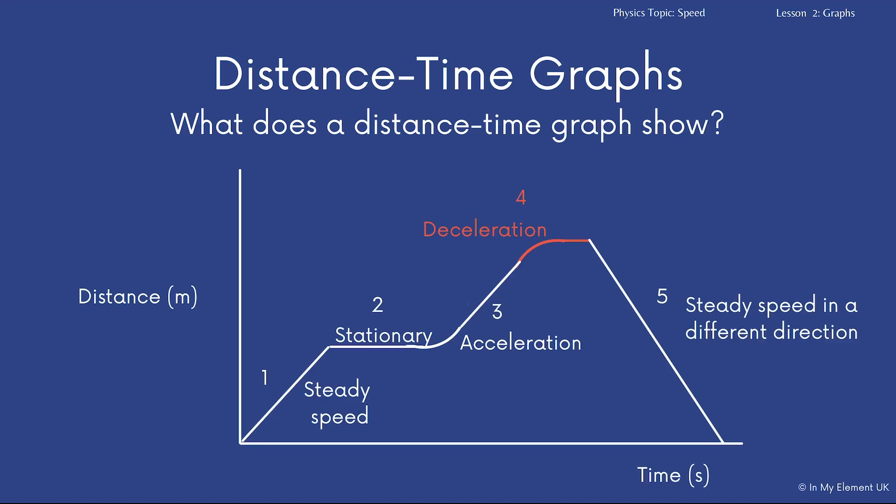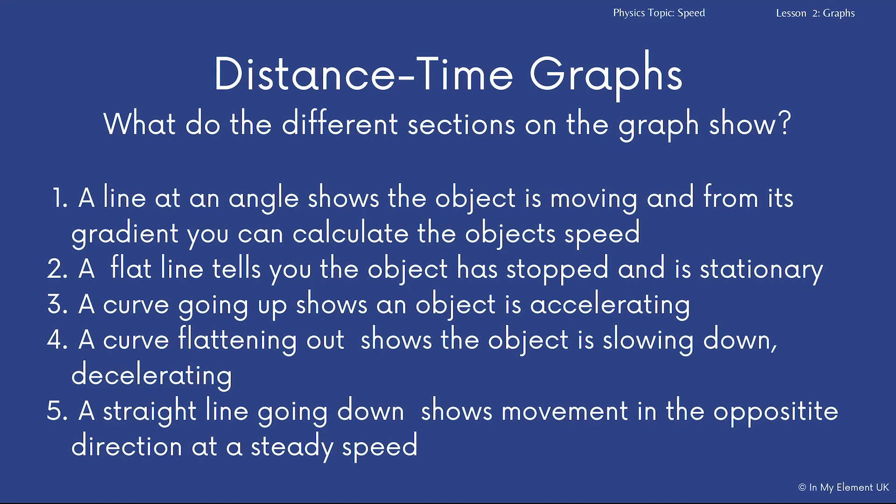Four, we've got deceleration, okay? And then number five, very simple, the line going down shows movement is in the opposite direction.